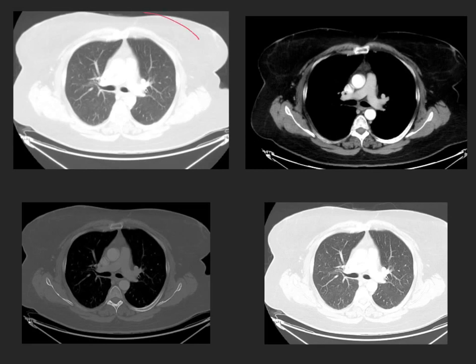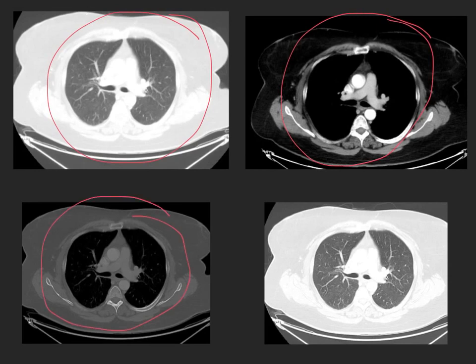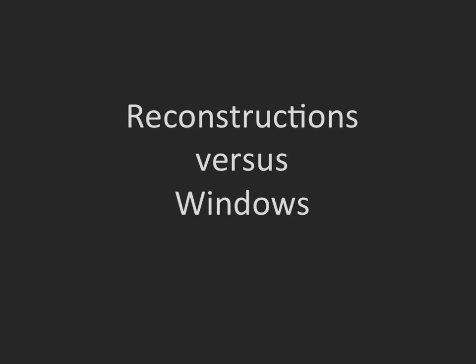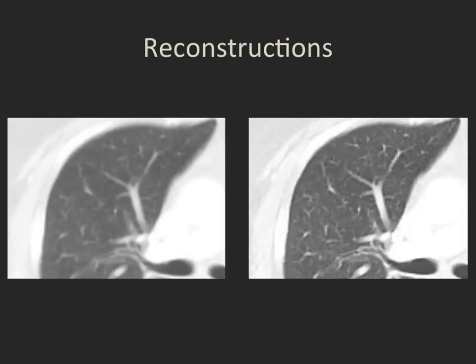For example, this is a typical lung window, a soft tissue window, a bone window, and this is not only a lung window here, but it is also a lung reconstruction. Let me explain quickly the difference between a CT reconstruction and a CT display window. Reconstructions are images that are produced by software processing the raw CT data. They're usually done by the technologist, but not always.